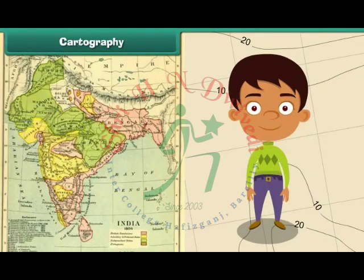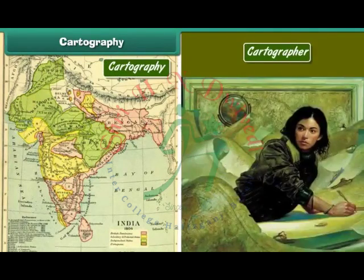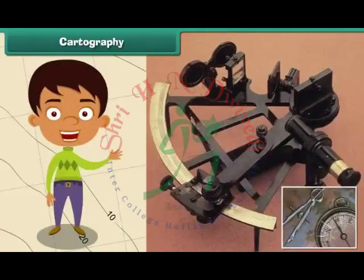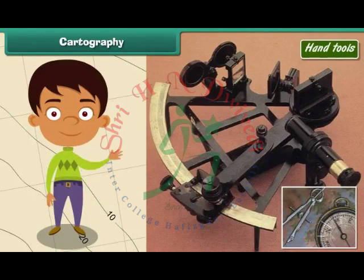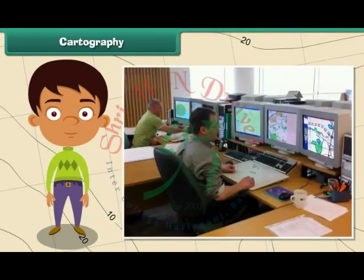Cartography is the science of drawing maps. The person who draws maps is known as a cartographer. In the olden days, maps were drawn using hand tools. Hand cartography was a time-consuming and difficult process. Maps drawn using hand tools were also inaccurate. But nowadays, maps are drawn with the help of computer software. Hence, they are more accurate.